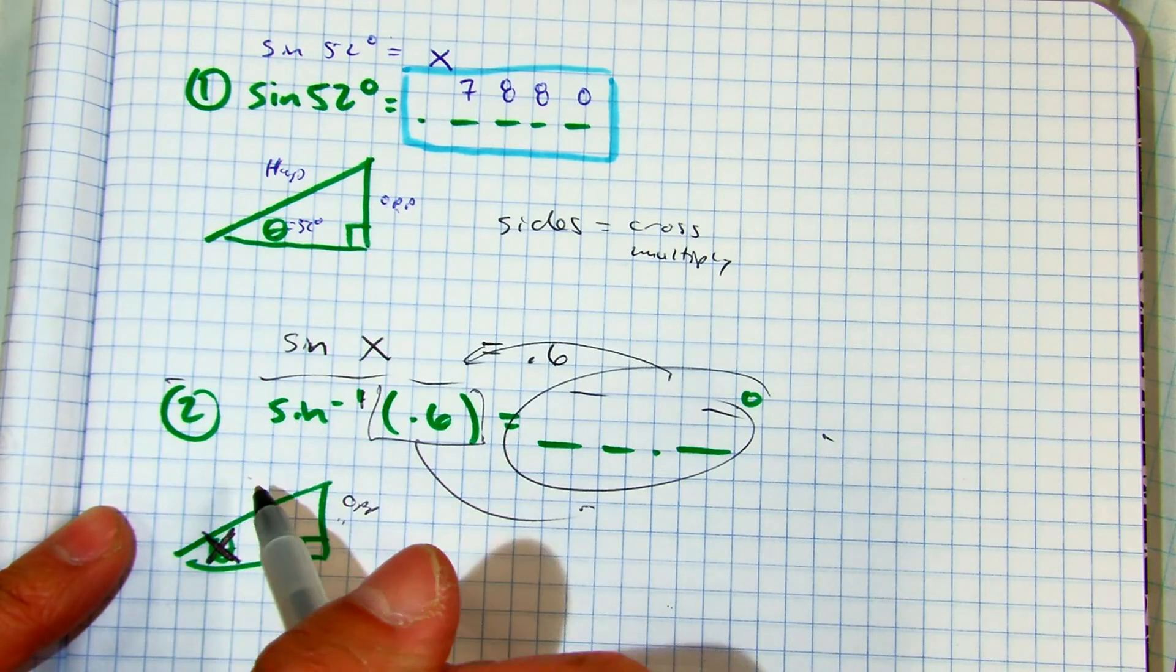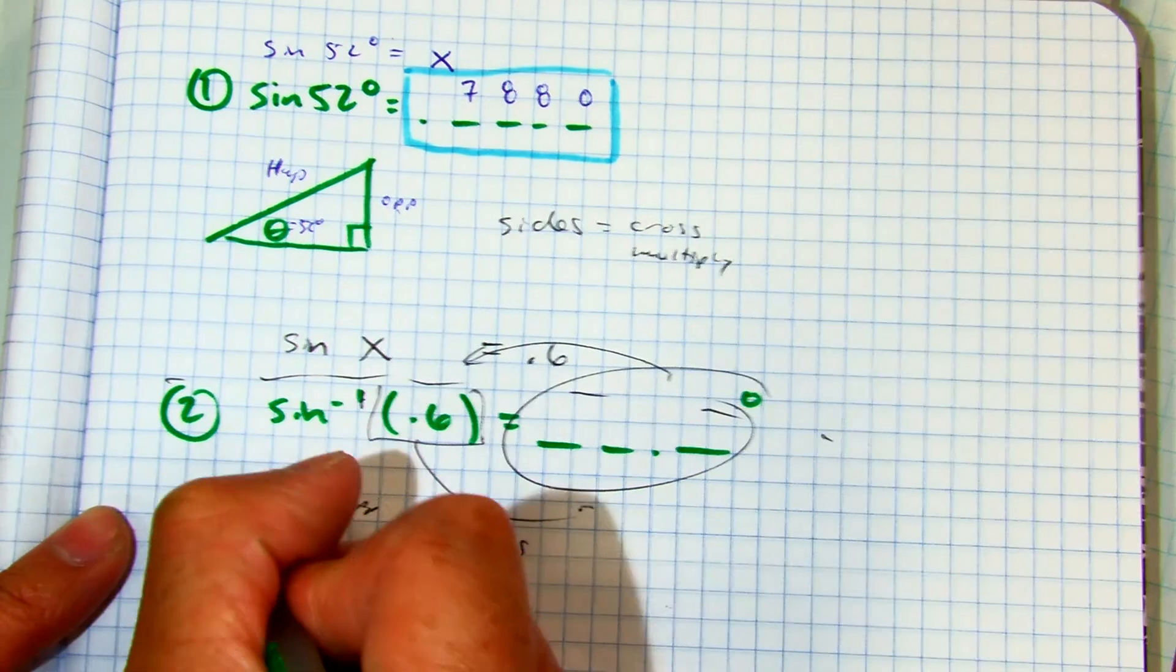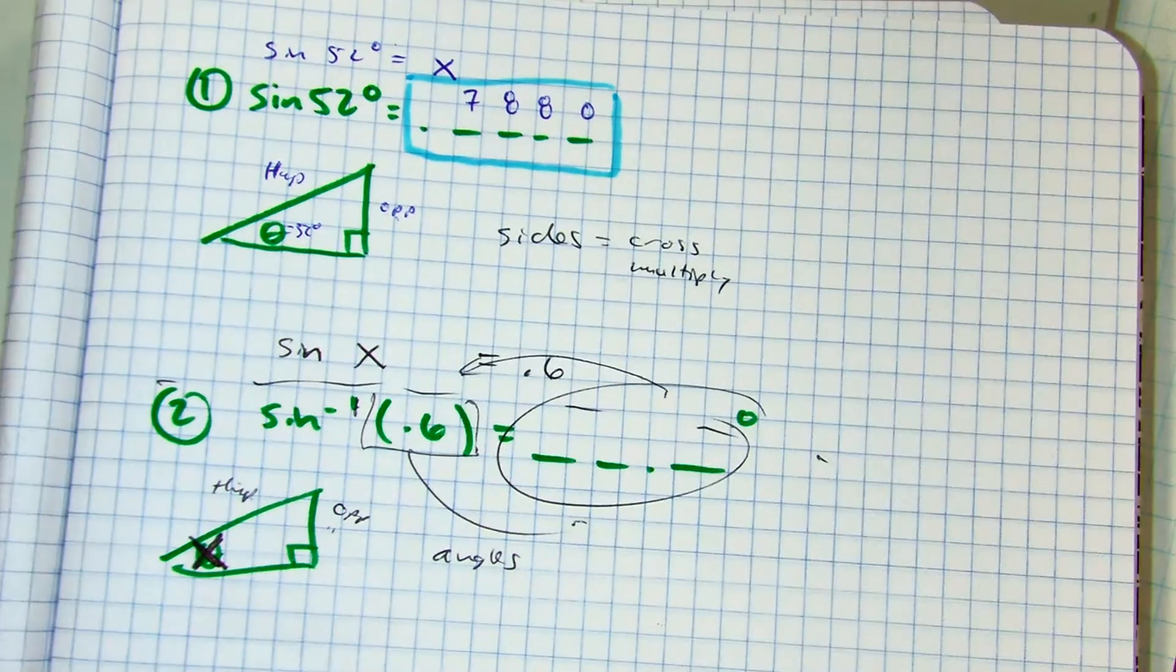So in this problem, to find angles, you have to do what? Cross multiply or inverse? Inverse. Inverse.